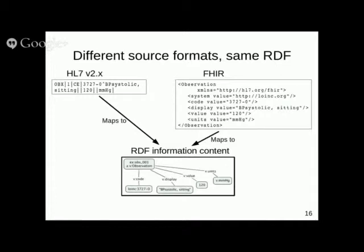For example, we might have an HL7 message — HL7 is used a lot in healthcare. Version 2.x has these cryptic things with vertical bars as separators between data items. That could be represented in terms of its RDF information content as an RDF graph. The exact same information might also be represented in a more recent format called FHIR, with an XML-based representation. The syntactic differences really don't matter when we're concerned about information content — that is what RDF captures, independent of data format.